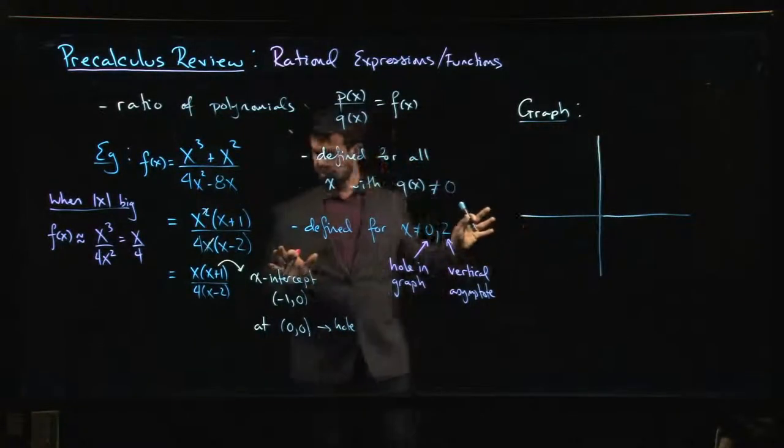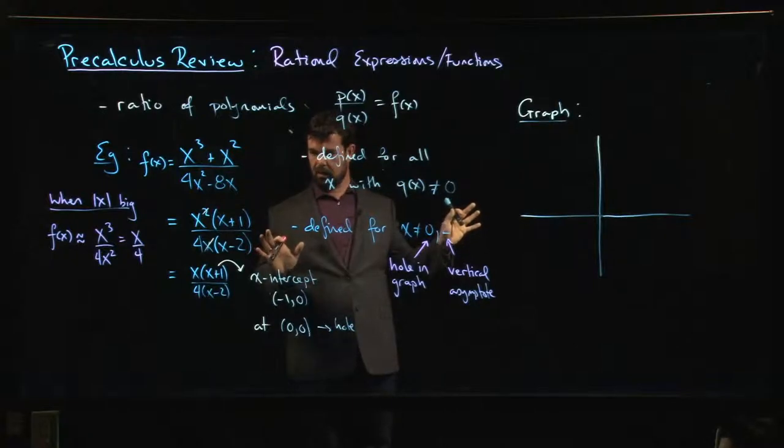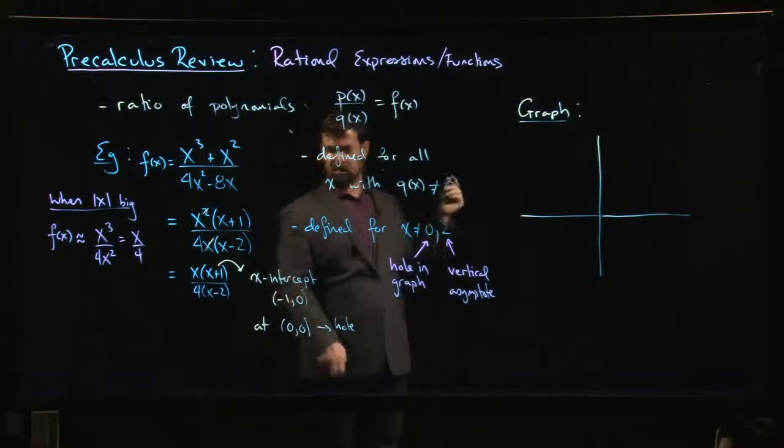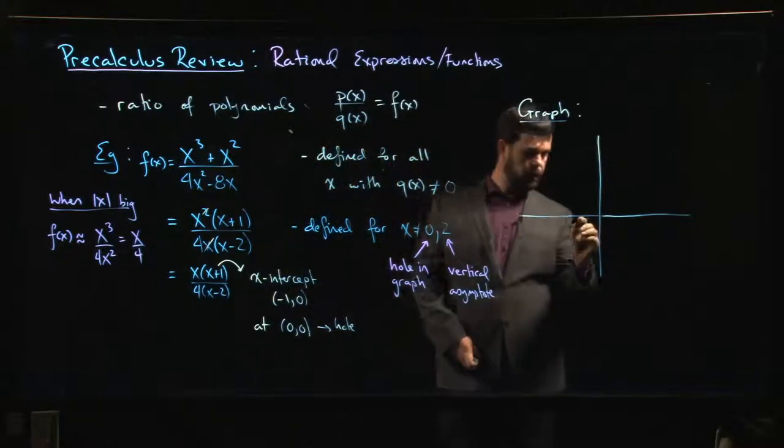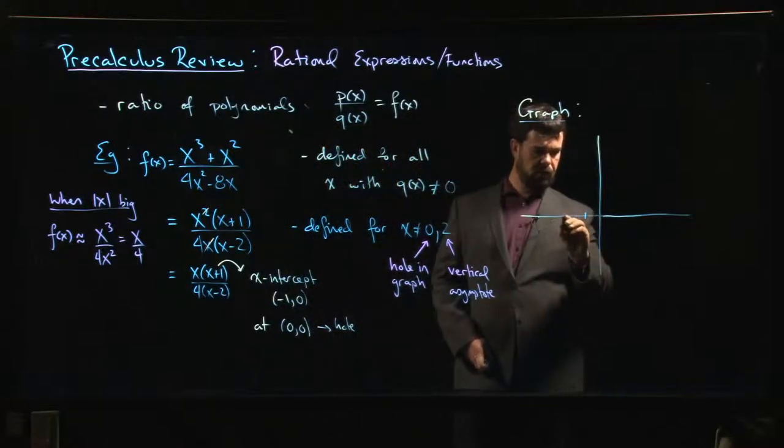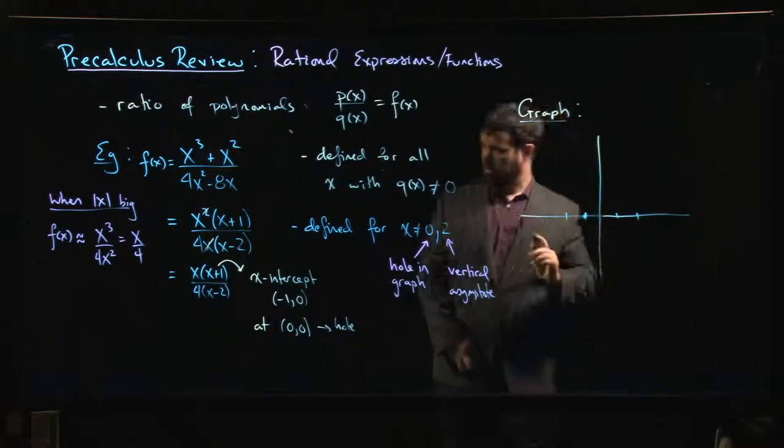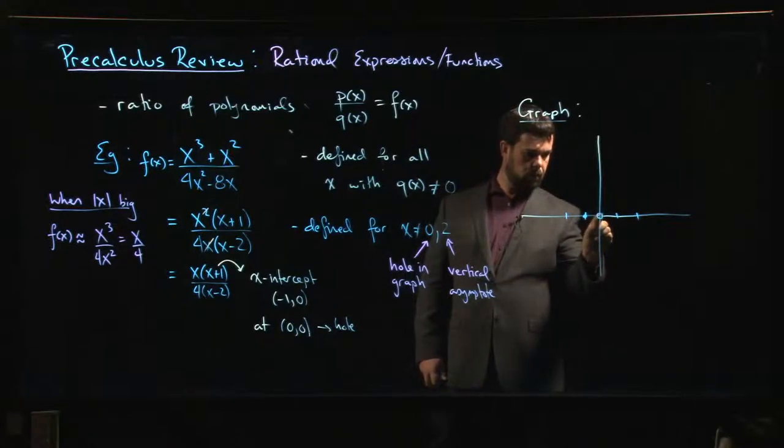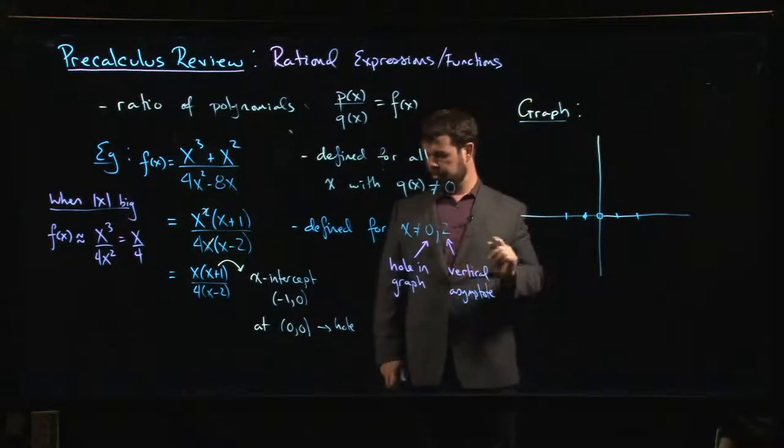Okay so let's think about the graph of this function. What can we say? First thing we can say is there's an x-intercept at minus one zero, so let's mark off a few points. There's an intercept right.